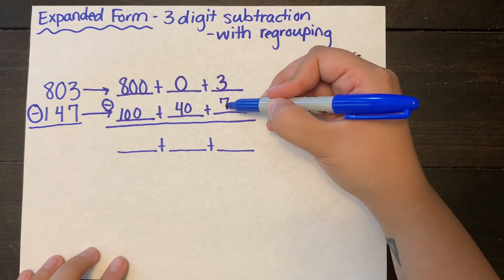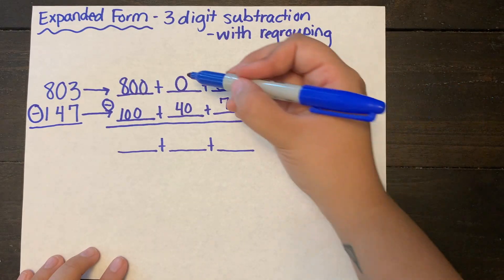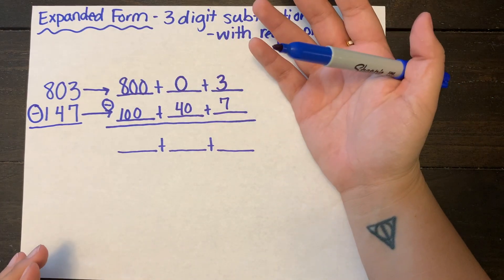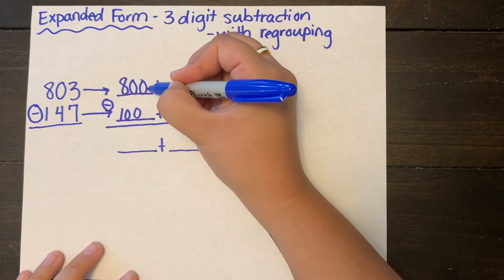I'm going to start with my ones column. As you can see, I cannot take seven away from three. And so I go over to my tens column and oh, there's nothing to take from there too.